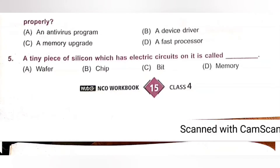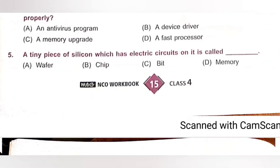Question 5: A tiny piece of silicon which has an electric circuit on it is called dash. A. Wafer, B. Chip, C. Bit, D. Memory. A tiny piece of silicon which has an electric circuit on it is called a chip. Option B is the correct answer.